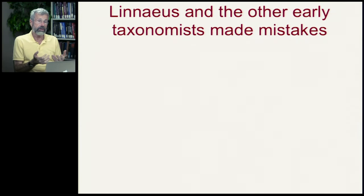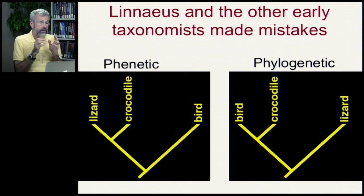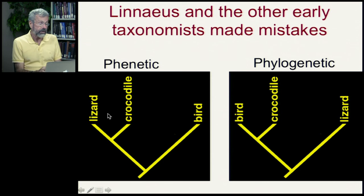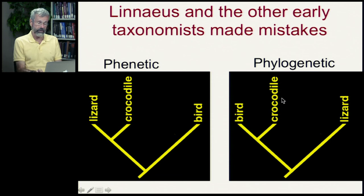During the times of Linnaeus and well into the 19th and early 20th century, taxonomists had available to them only a limited number of physical characteristics for making their classifications. So inevitably they made mistakes. If you're trying to classify things purely on physical similarities using a phonetic system, it doesn't surprise anyone that in phonetic classifications, people would cluster lizards as closely related to crocodiles and birds as quite distant. But as I'm about to show you, that's wrong. Birds are very closely related to crocodiles, neither of which are particularly closely related to lizards. The phylogenetic relationship is quite different from one based solely on superficial physical similarities.